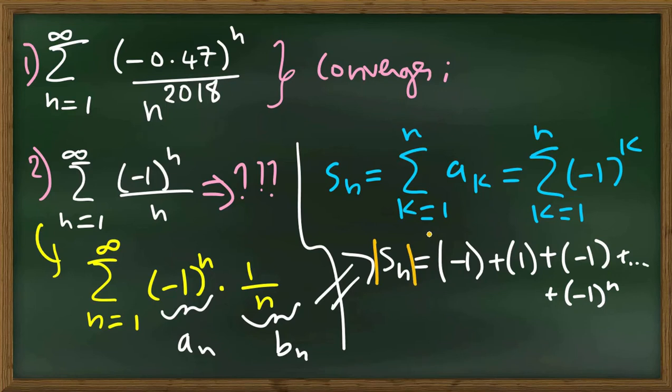Now, the absolute value of s_n is the absolute of this sum. And if you group all these terms, they cancel: minus 1 plus 1 is 0, minus 1 plus 1 is 0. So you end up with either 0 or 1. So the absolute of s_n is at most 1.